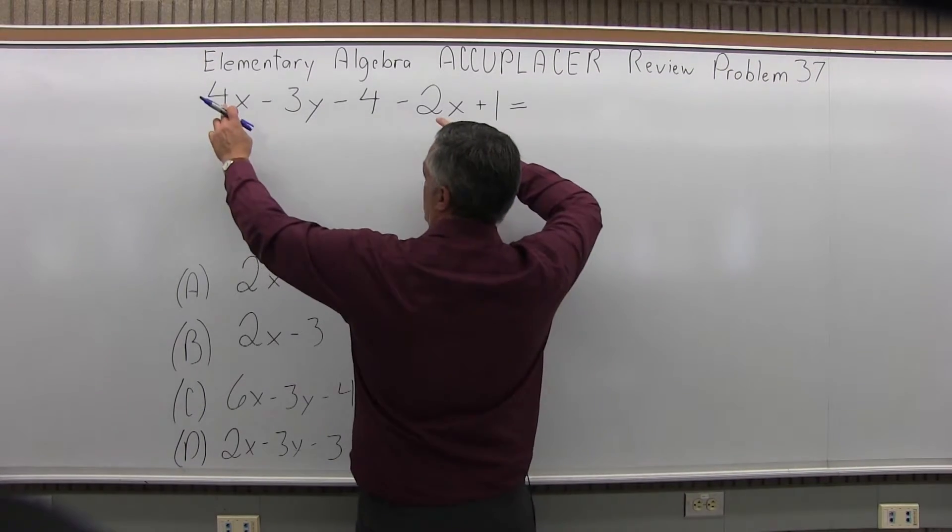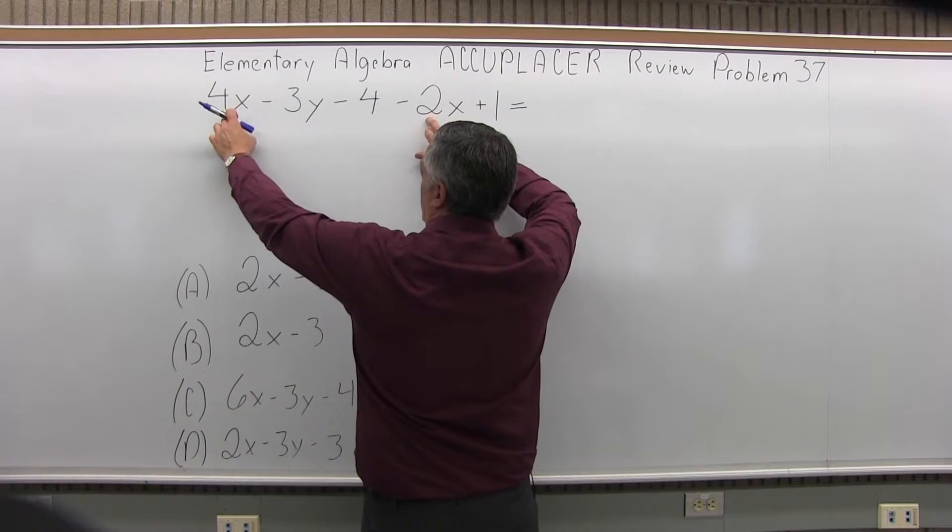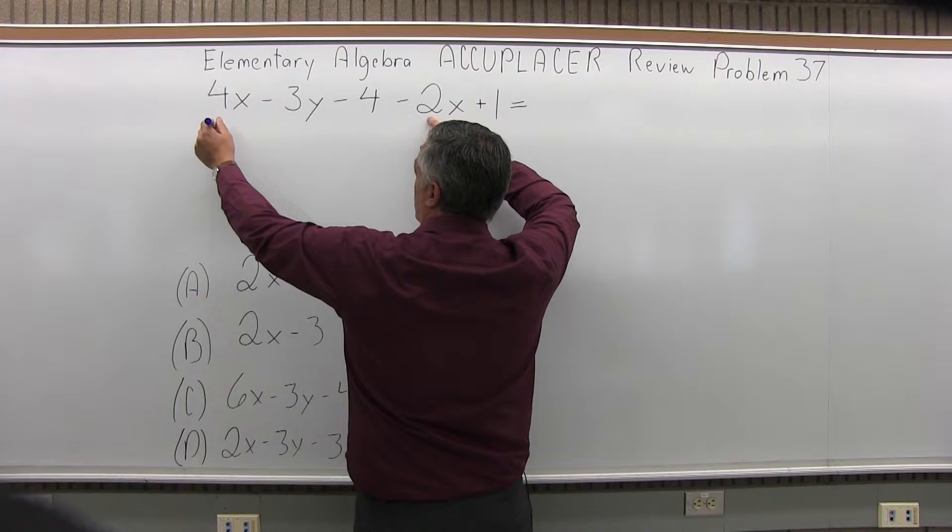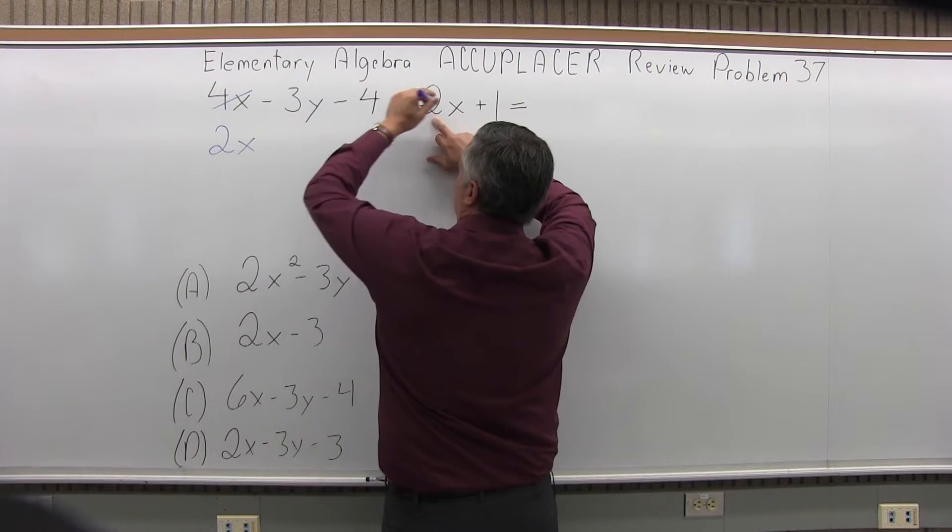So the x's show up in two different places. I have positive 4x and negative 2x over here. So positive 4 and negative 2 will give me a positive 2x, right, 4 minus 2.